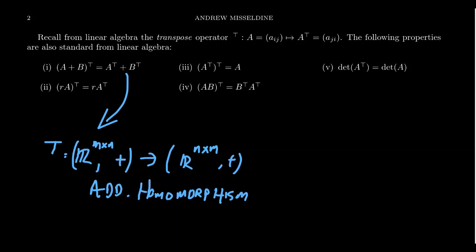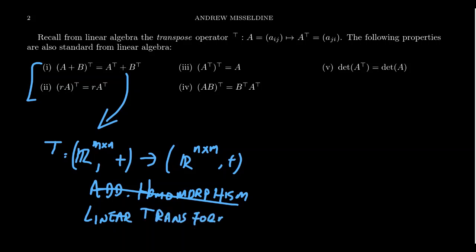Putting properties one and two together tells us that this map is actually better than an additive homomorphism — it's called a linear transformation because it preserves both addition and scalar multiplication. Another property: if you take the double transpose, you get back to the original matrix. So the transpose as an operator has order two.